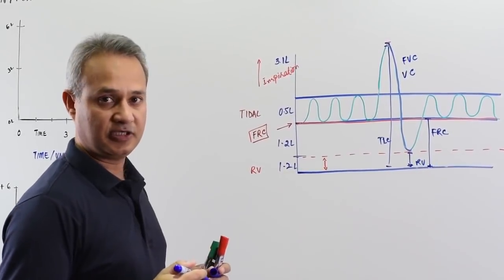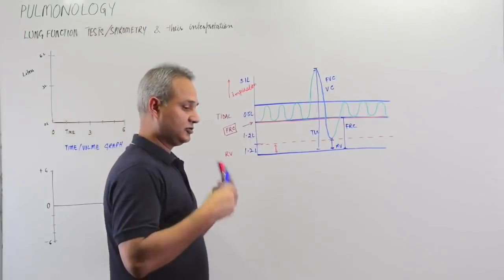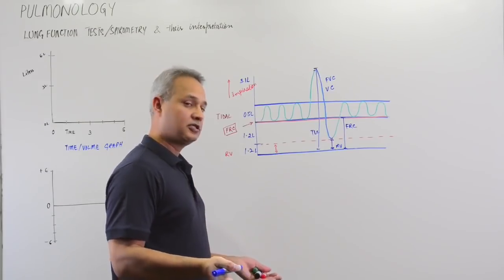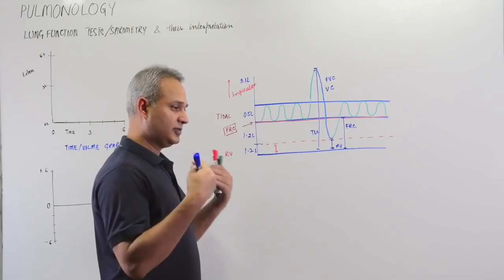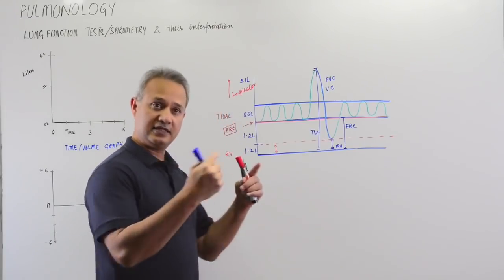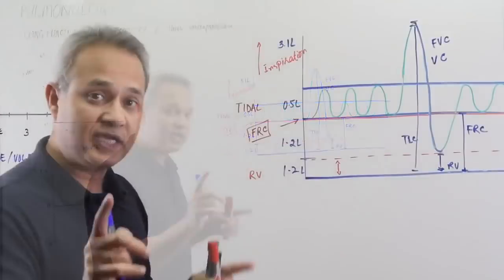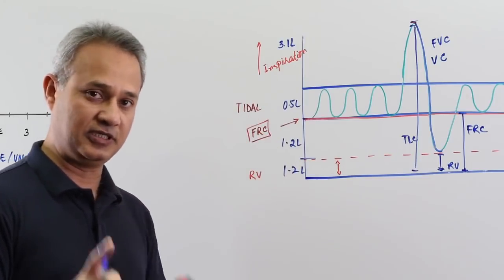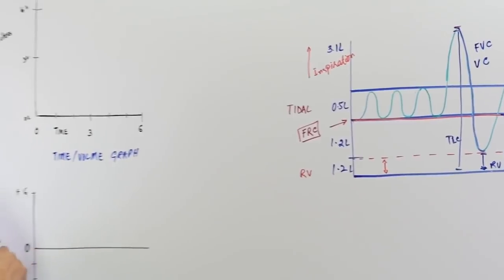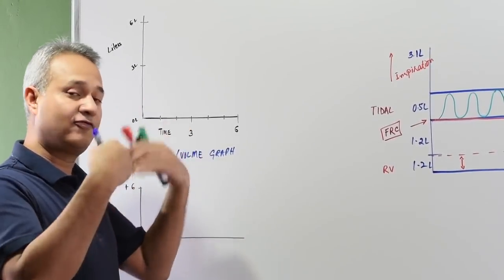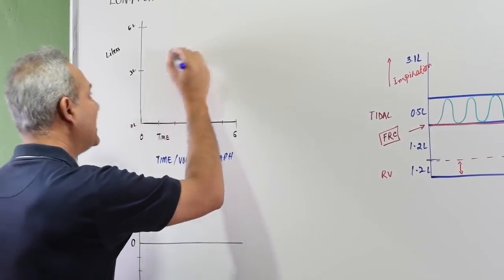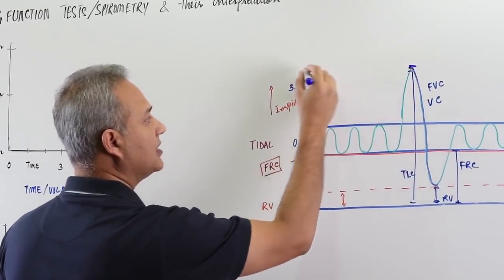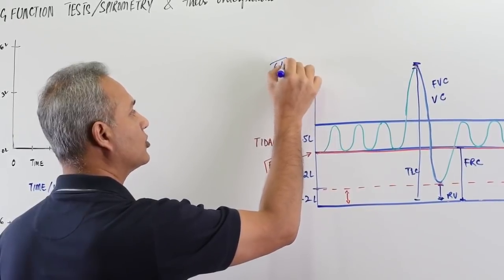Forced vital capacity is the vital capacity done with a full forceful inspiration followed by full forceful exhalation. In the time-volume graph, when you ask the patient to exhale after a full breath, they start exhaling — and if this represents about six liters of total lung capacity, they start expelling air. Within the first second, this is important: normally the patient would exhale about 4.8 liters.